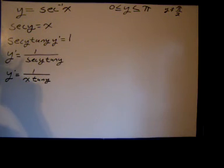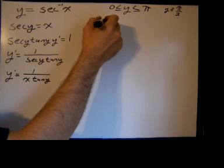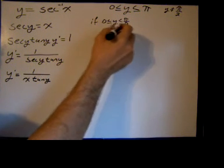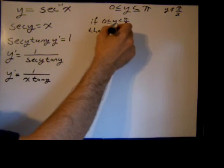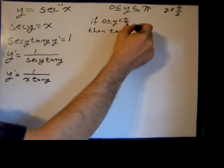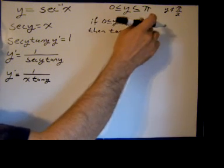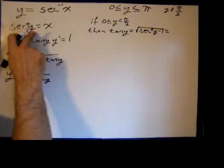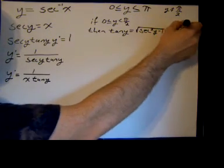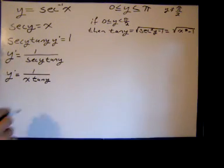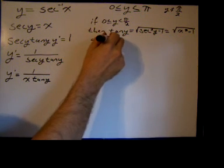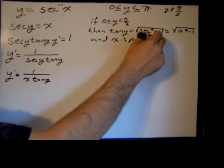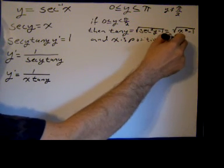Now for the tangent of y — this is the tricky part. If y is between 0 and π/2 (that is, greater than or equal to 0 and less than π/2), then tangent of y equals the square root of secant squared of y minus 1. Since secant of y equals x, that equals the square root of x² minus 1, and x is positive — that is, x is greater than 0.